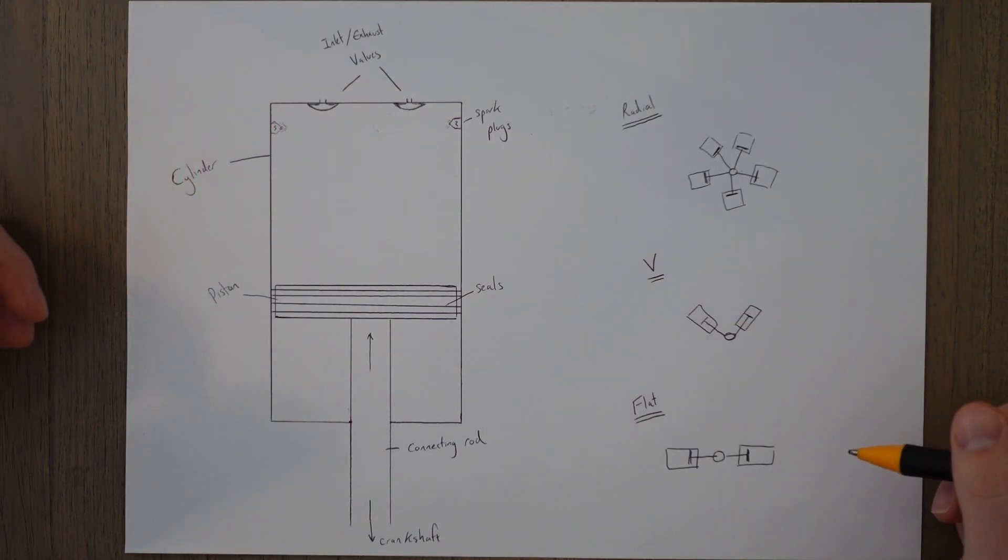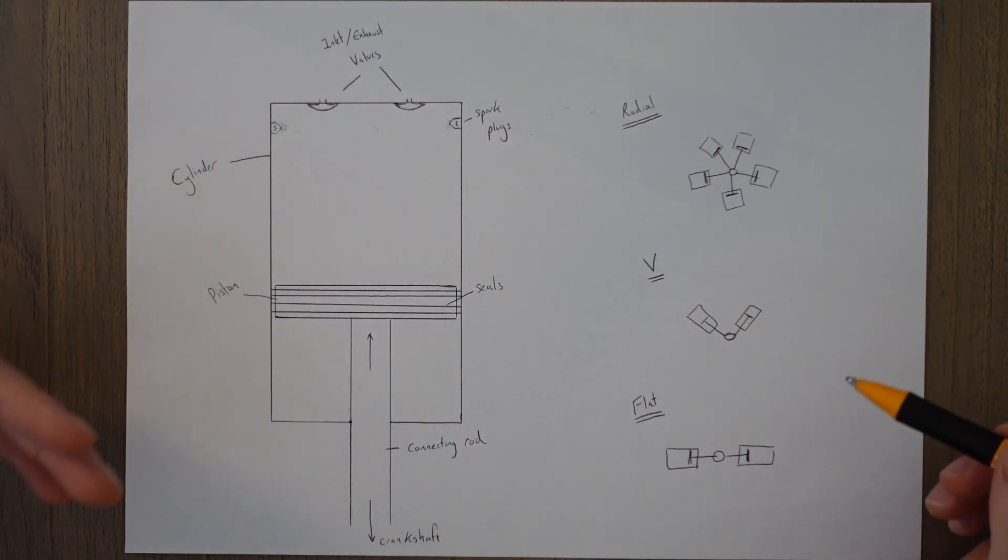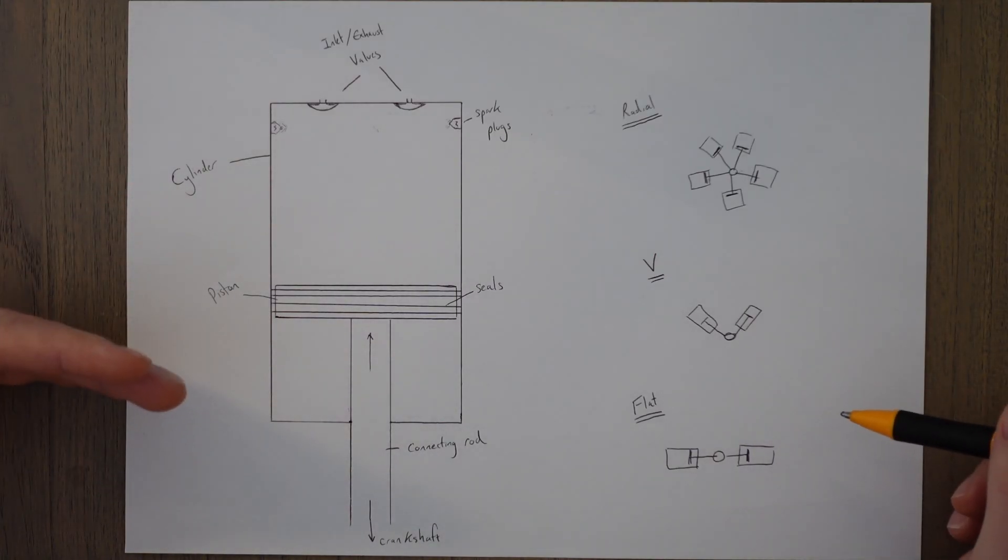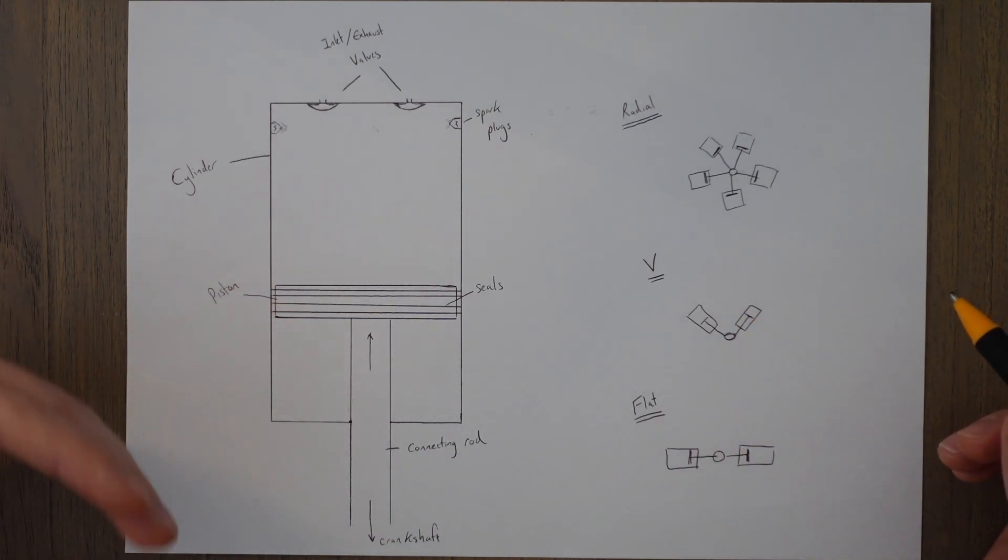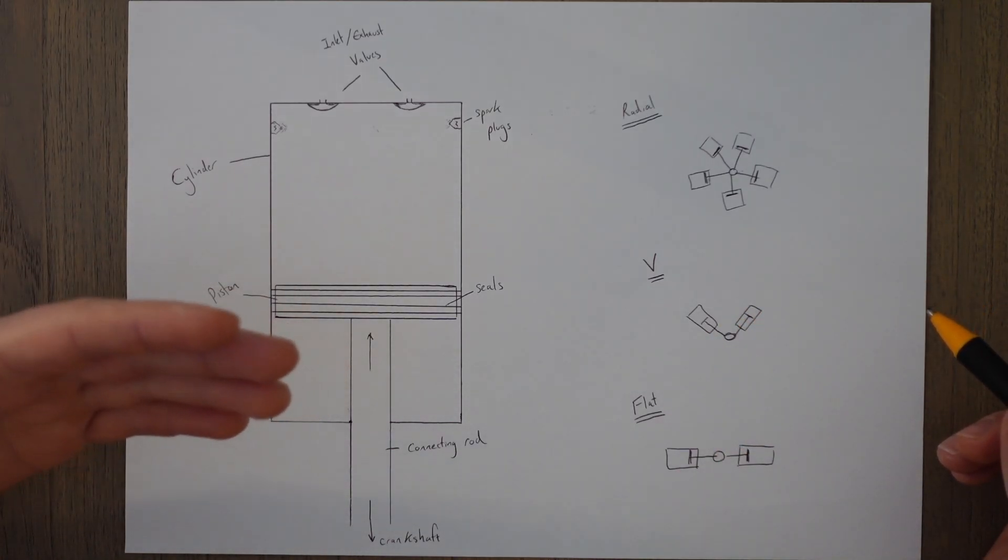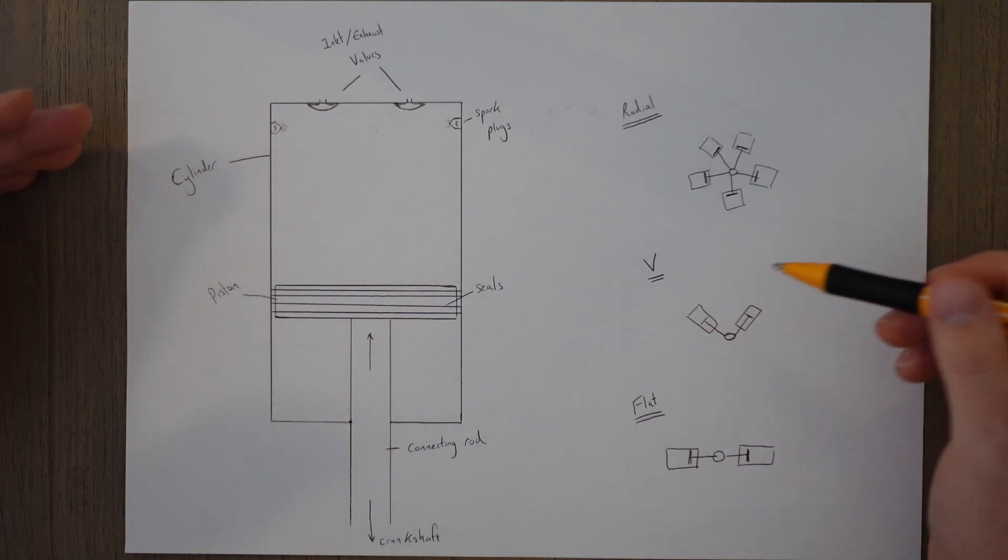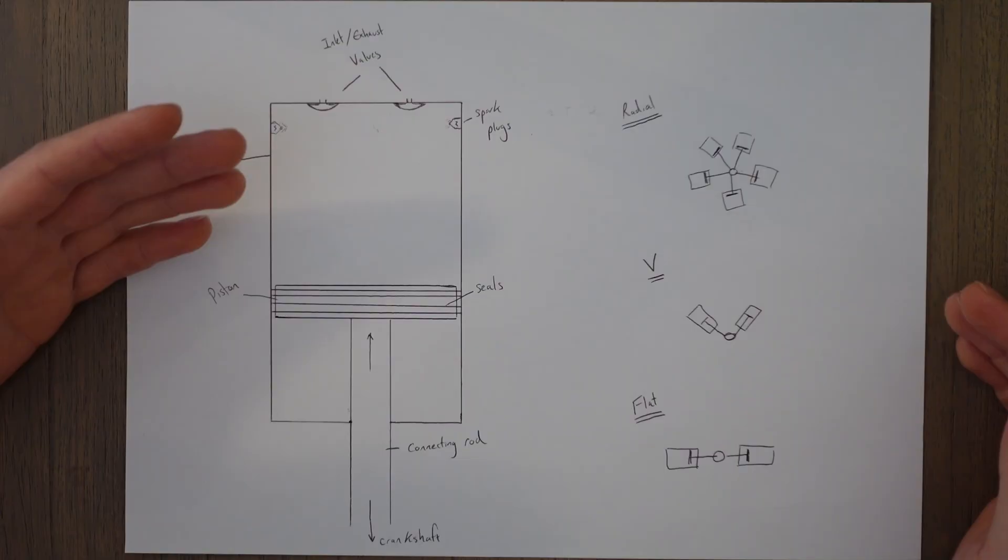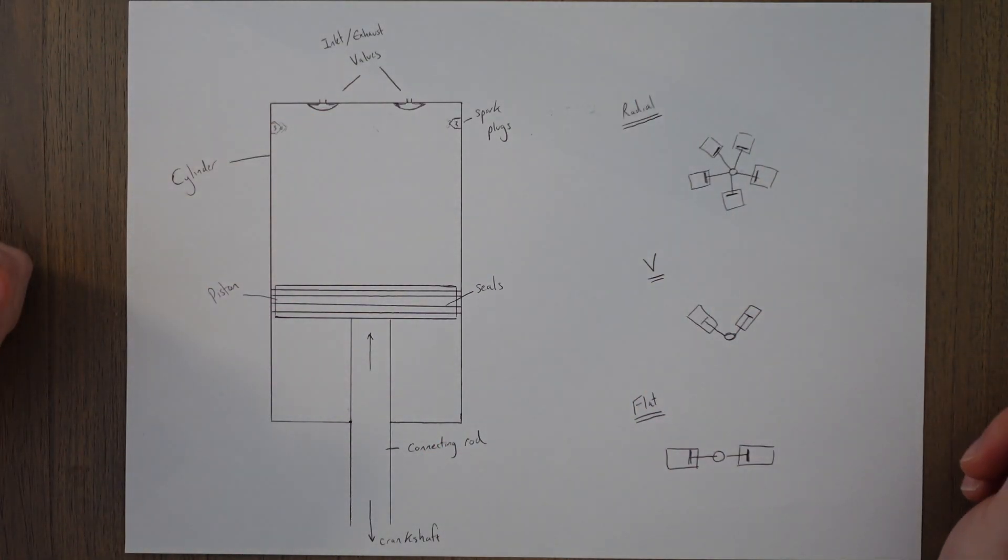You can also get flat engines. This is like a very opened-up V-engine, and it allows for that short crankshaft, but also it's flat, so the engine can be contained in a nice streamlined engine cover and reduced drag, making these engines very common in light aircraft. All arrangements of the cylinders—the radial, the V, and the flat—have their place in aviation, and one will be picked over the other for various different reasons that work with the design overall of the aircraft.